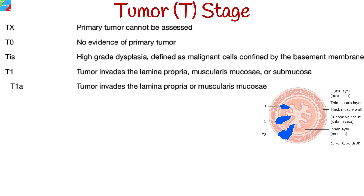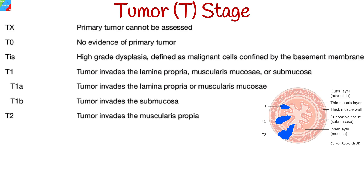T1 can further be subclassified into T1a and T1b. In T1a, tumor invades the lamina propria or muscularis mucosa. In T1b, tumor invades the submucosa. T2 means that the tumor has penetrated the muscularis propria, the deeper muscle layer of the esophagus. T3 indicates that the cancer cells have extended through the esophageal wall into the adventitia, the outermost layer, or invades adjacent structures such as the bronchus, pericardium, or diaphragm.